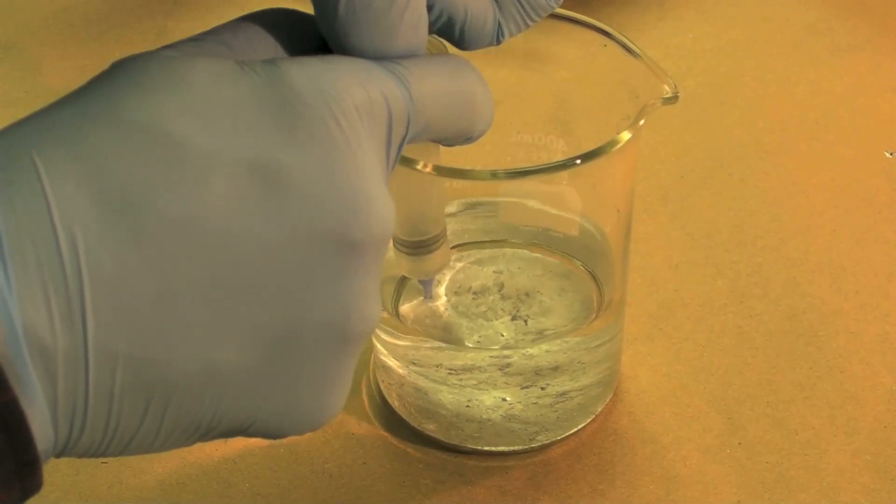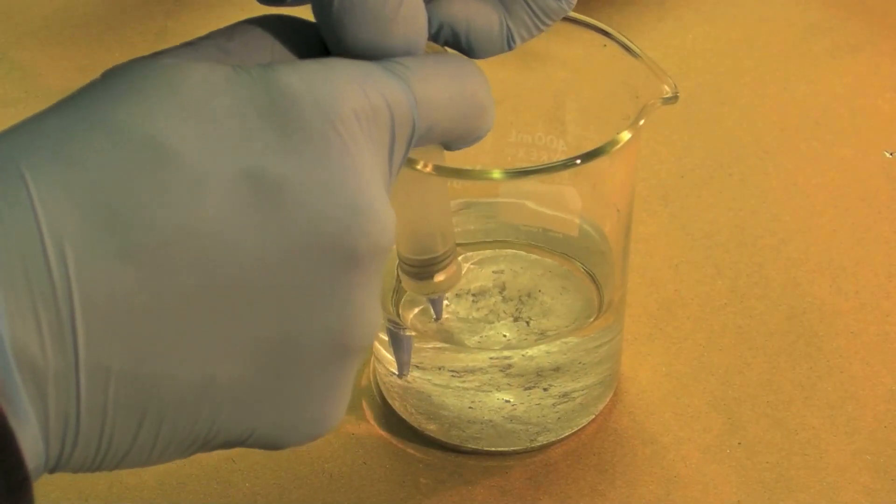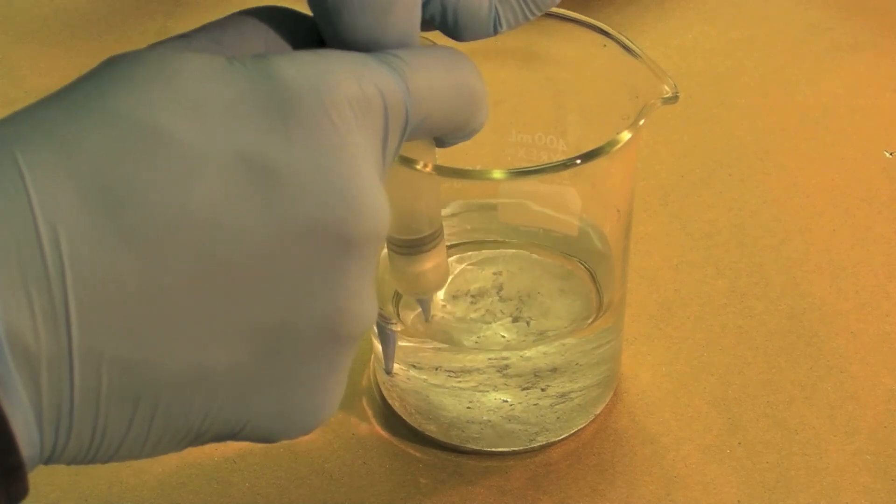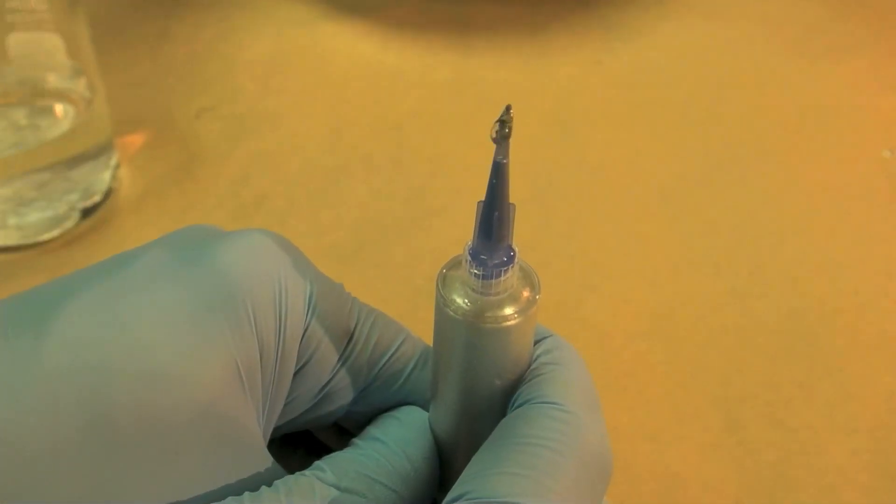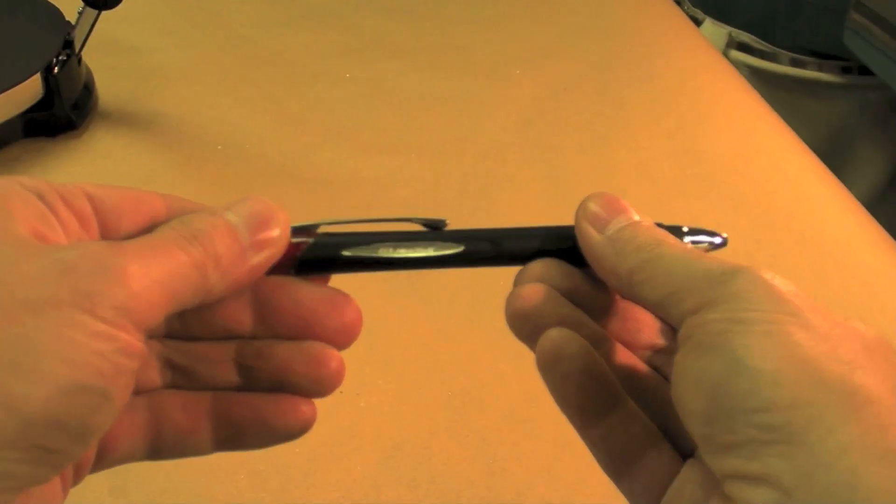I used a tapered tip syringe to suck up the liquid metal ink. A little bit of water came into the syringe, but inverting the syringe allowed me to press the water out of the top.